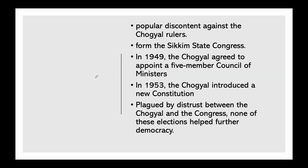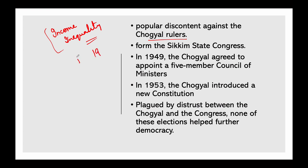There was continued struggle in Sikkim in the following decades. Gaping income inequality and feudal control over key resources led to popular discontent against the Chogyal rulers. In December 1947, diverse political groupings came together to form the Sikkim State Congress. The Chogyal agreed to appoint a five-member council of ministers — three were Congress nominees and two were his own.